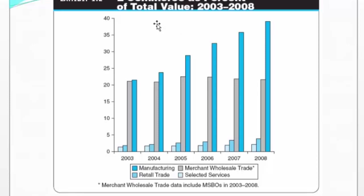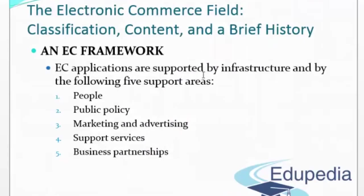Now, what I'm trying to explain is e-commerce as a percent of total value. If you look at the legend - manufacturing, retail, merchant wholesale trade, and selected services - this data goes up until 2008, showing how things have changed over the years. Manufacturing is more in demand, the graph trend is mostly consistent but needs have increased. Wholesale has remained about the same. This information is useful to know if you're starting your own business, depending on what product or market you're targeting.